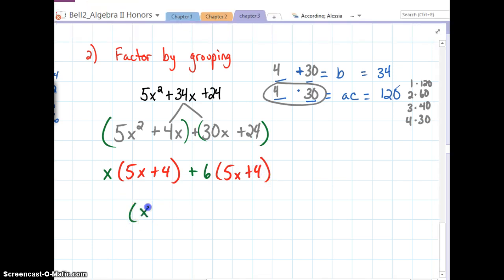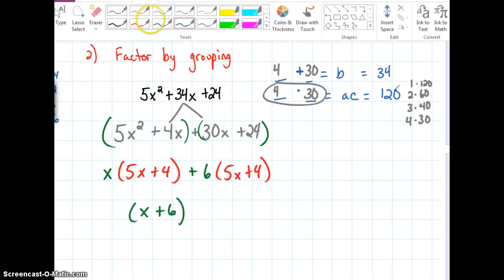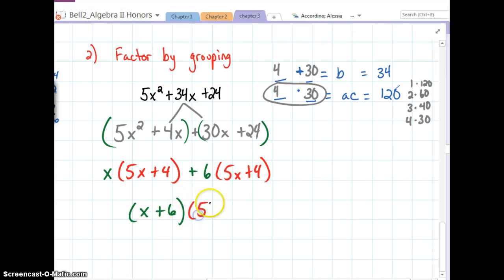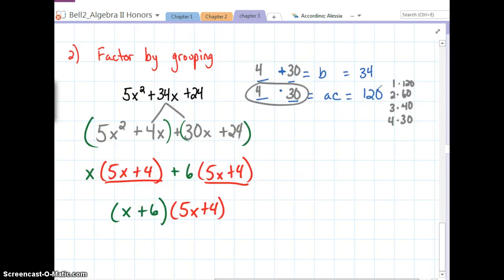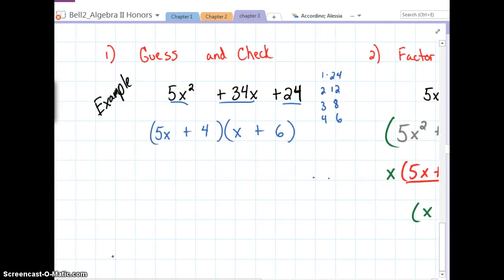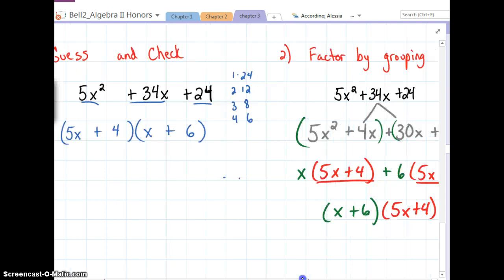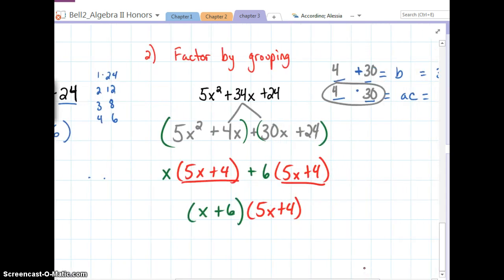And, we should get x plus 6 times 5x plus 4. What you really did there was factor out a 5x plus 4. This is, like, almost like a GCF right here. And, when you factor out a 5x plus 4, you get these numbers that are on the outside, which is x plus 6. Again, I don't really care which way you do it. Whichever way makes more sense. If you don't like to guess and check, then you can factor by grouping. There's less guessing and checking going on. It's more of a straightforward way of doing it.